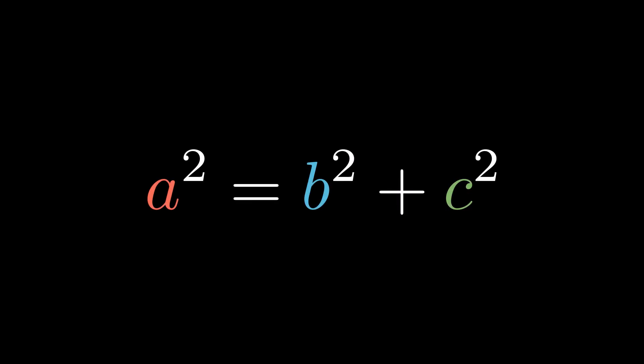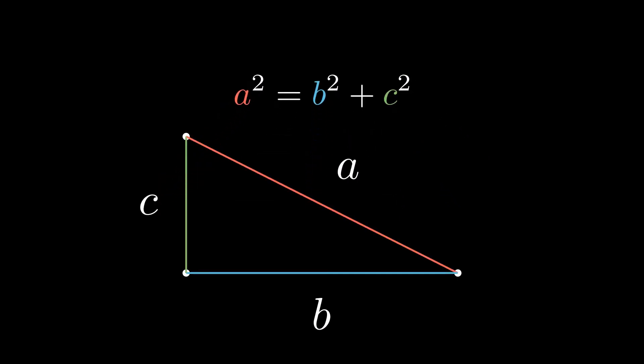The Pythagorean Theorem needs no introduction. But here we are. The variables in this equation represent the lengths of the sides of a right triangle. Using this special relationship, we can calculate the length of any of the sides if we only know the other two.